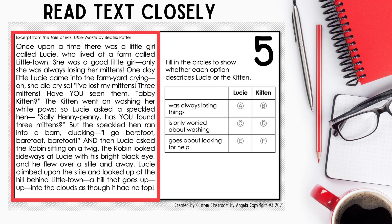Let's look at the passage. Once upon a time, there was a little girl called Lucy who lived at a farm called Littletown. She was a good little girl, only she was always losing her mittens. One day, little Lucy came into the farmyard crying. She cried, 'I've lost my mittens, three mittens. Have you seen them, tabby kitten?' The kitten went on washing her white paws.